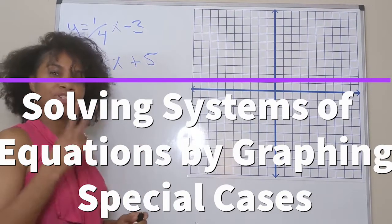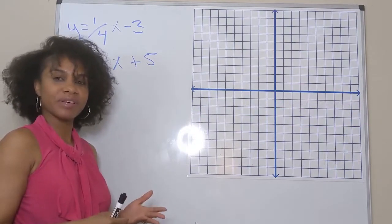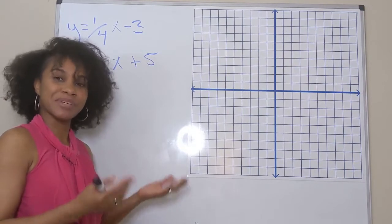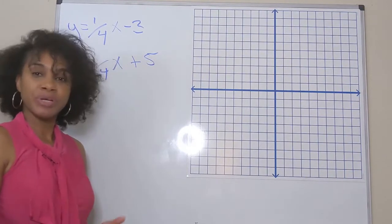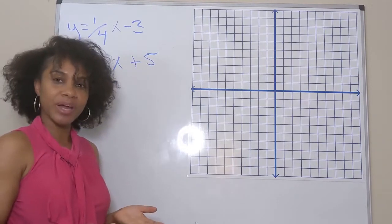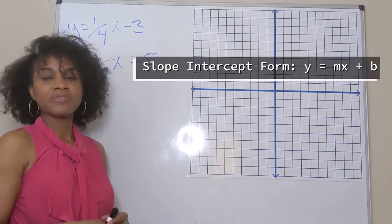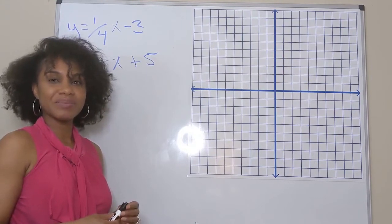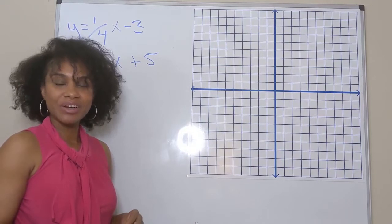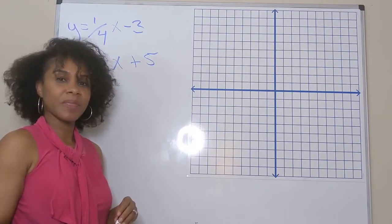In this video I'm going to show you two examples of solving systems by graphing where we're going to get some special answers. A prerequisite skill you need is knowing how to graph a line in slope-intercept form. If you're not familiar with that, please see my video on graphing a line in slope-intercept form and I'll link it at the end of this video.